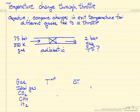This example compares the changes in exit temperature from an adiabatic throttle for different gases. We're feeding a high pressure gas at 75 bar and 350 Kelvin, and the exit is at 2 bar, still a gas with no phase change involved. The question is what is the outlet temperature?